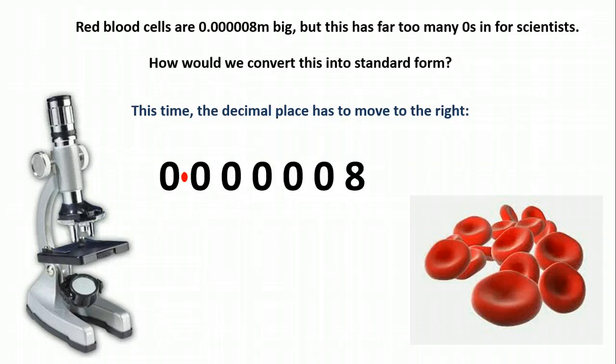So here's our decimal, and we're going to count how many places to the right it has to move. 1, 2, 3, 4, 5, 6. So it's moved 6 places to the right.